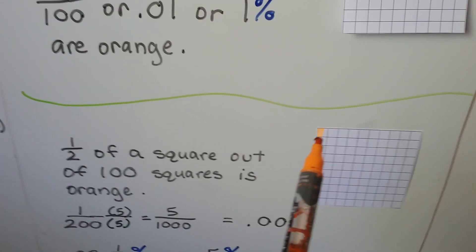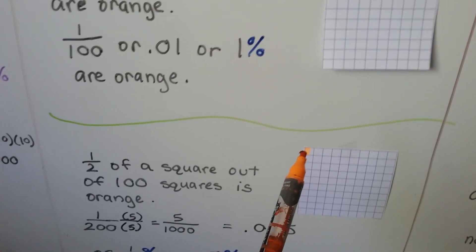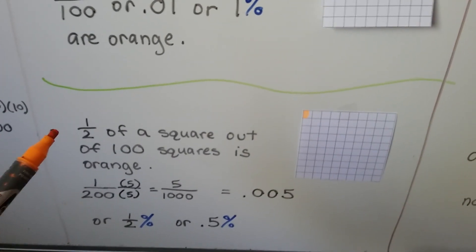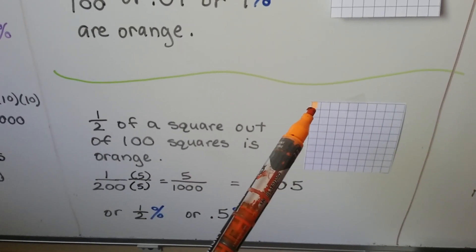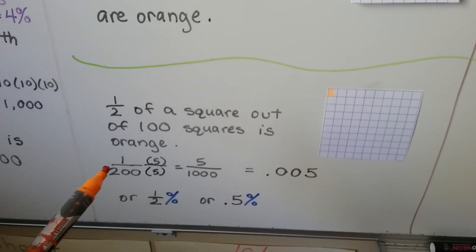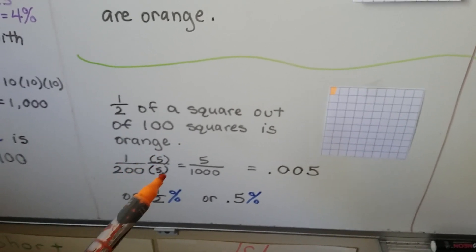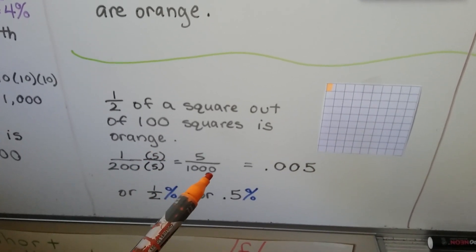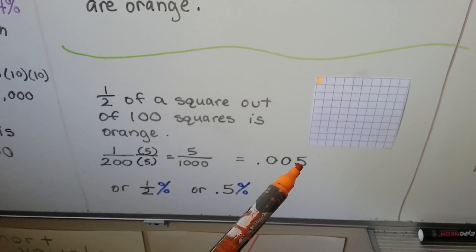Now look at this one. Only half of this one is orange. This one we had the full square was orange. Now only half of it's orange. That means half of a square out of 100 squares is orange. That means they're splitting each of these 100 squares into two parts. That means there's 200.